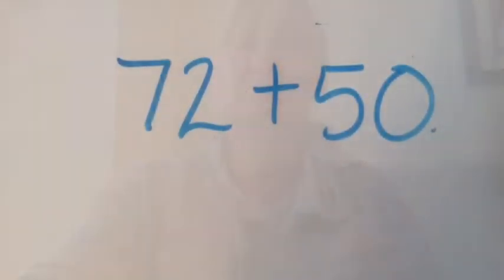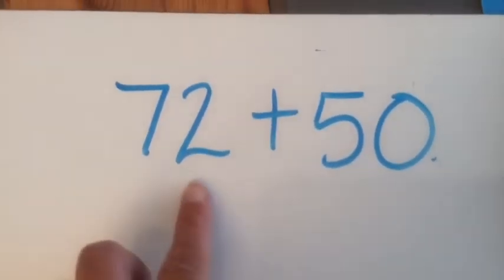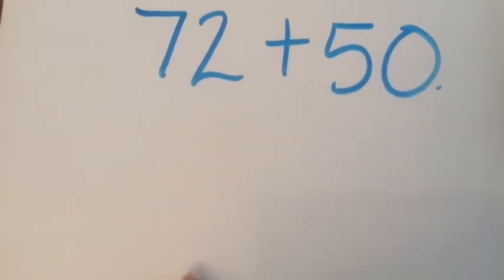So I could do seventy-two, eighty-two, ninety-two, a hundred and two, a hundred and twelve, a hundred and twenty-two. Try and give this a go. Remember your answer will end in a two because you're just jumping down the twos column.